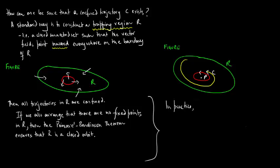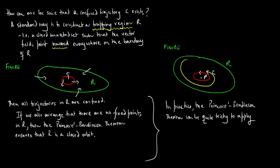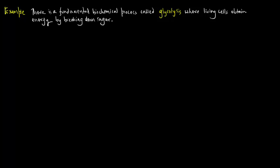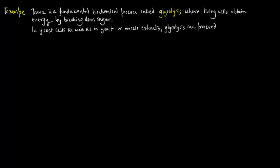In practice, however, the Poincaré-Bendixson theorem can be quite tricky to apply. So we consider an example. There is a fundamental biochemical process called glycolysis, where living cells obtain energy by breaking down sugar. In yeast cells, as well as in yeast or muscle extracts, glycolysis can proceed in an oscillatory fashion.